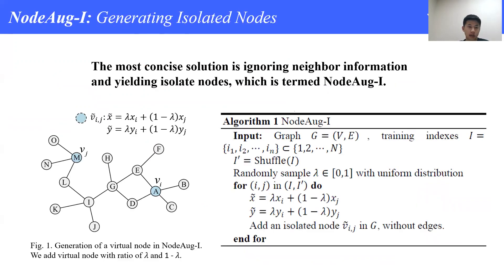First is NodeAug-I. NodeAug-I is the simplest one. For two nodes vi and vj, NodeAug-I knows their label information and simply mixes vi, vj node features and labels to create a new isolated node vij. Despite the simplicity of NodeAug-I, we find it quite effective for well-known datasets like Cora. The main drawback of NodeAug-I is that it ignores edges or graph structures. The next two variants, NodeAug-N and NodeAug-S, will take graph structures into consideration.